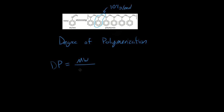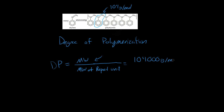For a simple example, if the molecular weight of the polymer is 104,000 grams per mole, and we divide that by the molecular weight of the repeat unit — which I showed how to calculate in a previous video — 104 grams per mole, then the degree of polymerization, or how many monomers are in the polymer, is equal to 1,000.